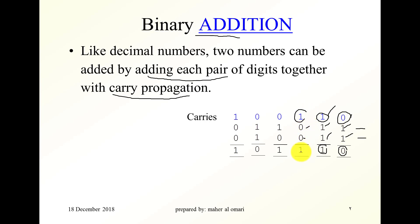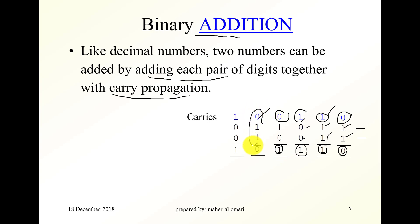This carry is added to these two bits, giving a one with a carry of zero. Then zero plus one plus zero is one with a carry of zero. Adding these three numbers gives zero with a carry of one. Adding the final three numbers gives a one with a final carry of zero.